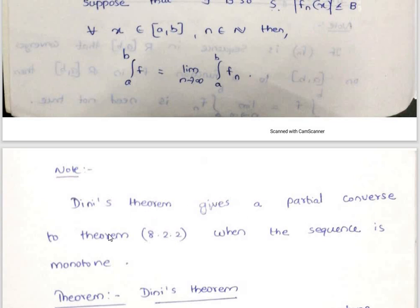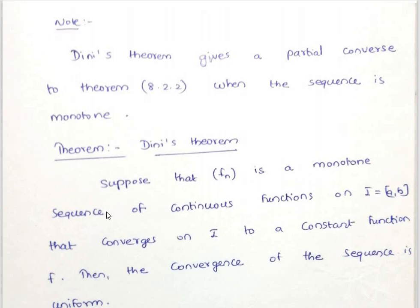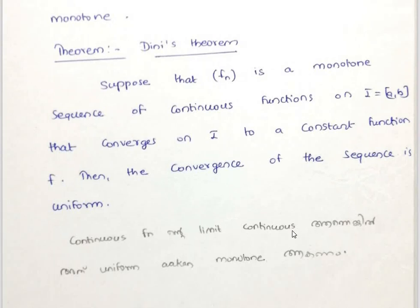Dini's theorem gives a partial converse to the previous result when the sequence is monotone. The converse states: if the sequence fn is continuous and f is continuous, then convergence is uniform — but only when the sequence is monotone. Suppose that the sequence fn is a monotone sequence of continuous functions on a compact interval I that converges on I to a continuous function f. Then the convergence is uniform.